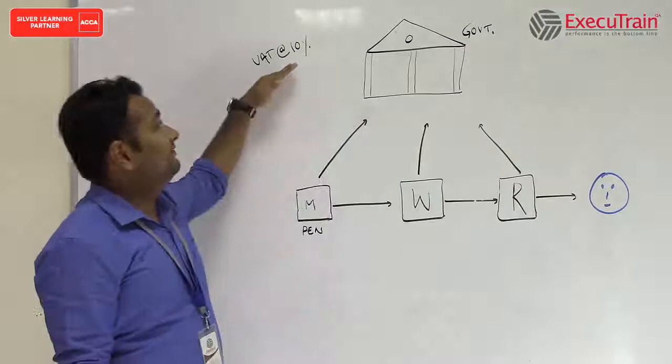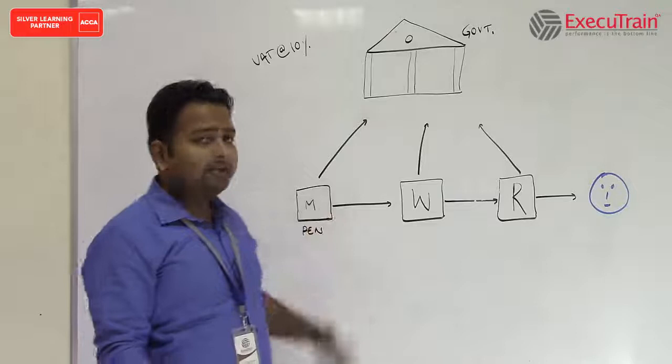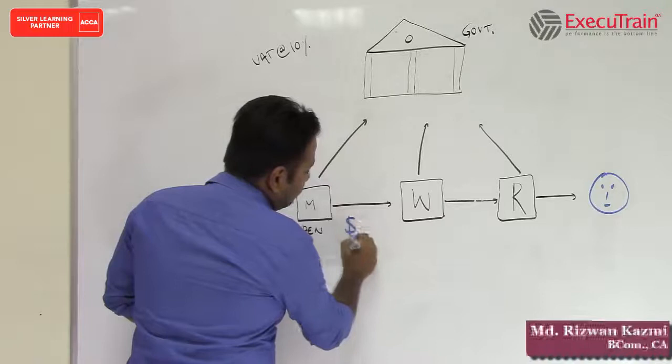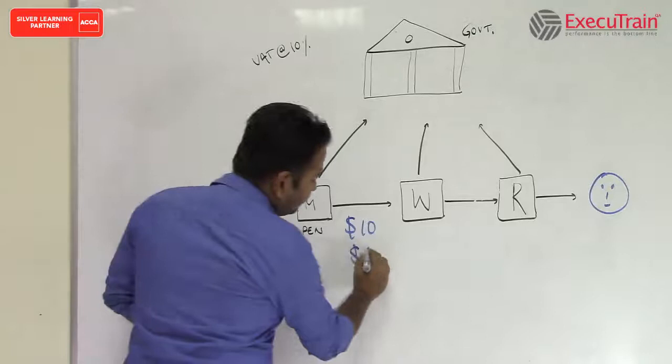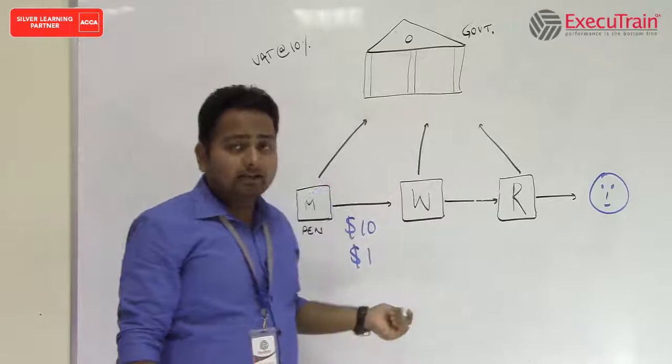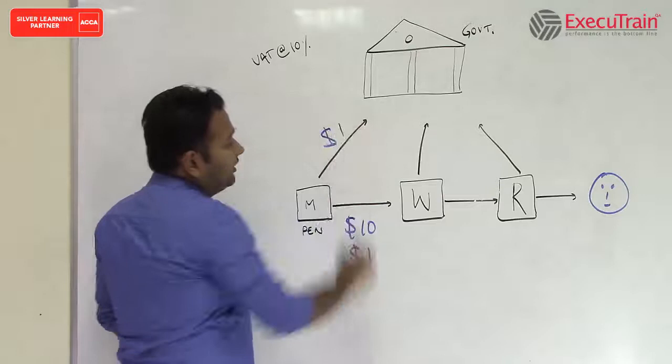Now this manufacturer sells the pens to the wholesaler at $10. So the VAT comes out to be $1, which is at the rate of 10%. So this $1 of VAT needs to be paid to the government at the time of sale. So this manufacturer has a liability to give $1 to the government.